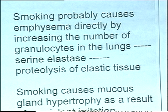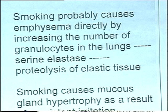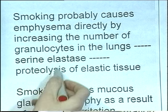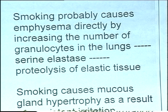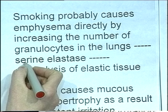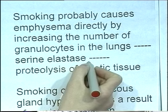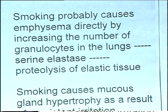Now, let's think about why smoking causes emphysema. In the lungs of smokers, there are more granulocytic white blood cells. The granulocytes secrete an enzyme called serine elastase. The '-ase' tells you it's an enzyme. And this is an enzyme which actually digests elastic tissue.